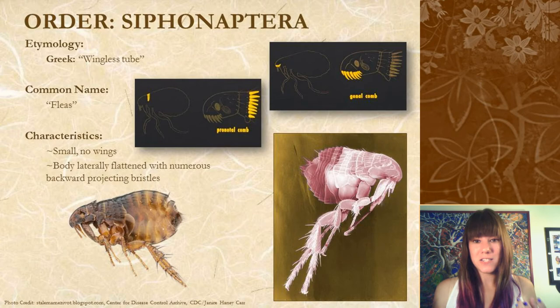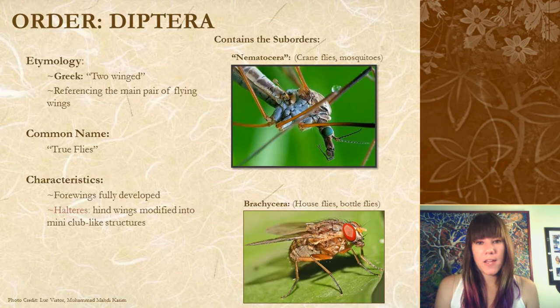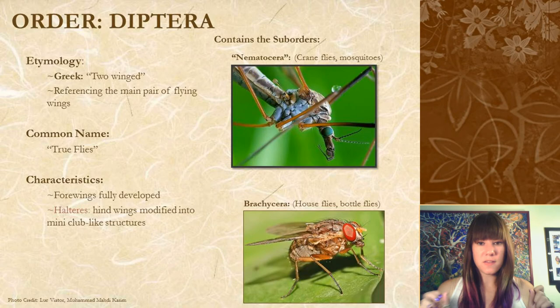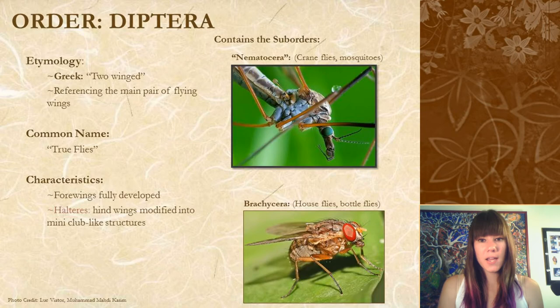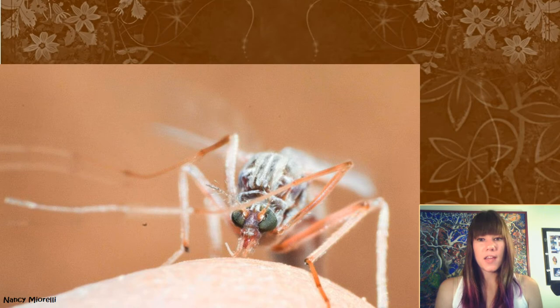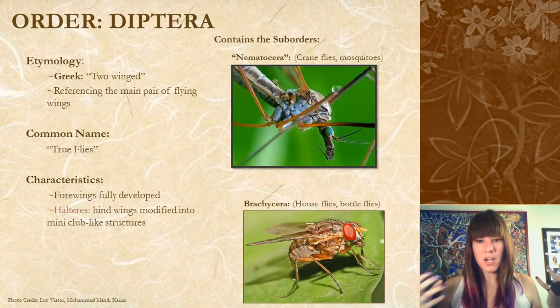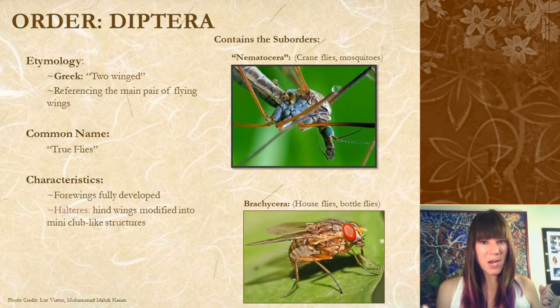The next order is Diptera — these include your true flies. In Greek, diptera means 'two winged,' referencing the fact that Diptera only has one pair of membranous wings while the other pair has been reduced into those nubby halteres. Diptera has two sub-orders. The first is Nematocera, which in Greek means 'thread horn,' because all groupings in this sub-order have filiform or thread-like antennae. Nematocera is kind of a taxonomic waste dump — anything with filiform antennae that's a fly gets dumped in whether or not they're related, making it paraphyletic or polyphyletic.